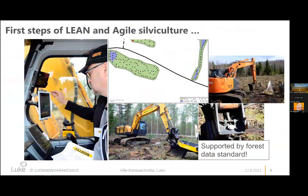One approach is precision forestry or agile operations, which take into account the soil and site properties better, and also the needs of different kinds of forest owners. This is one example concept of agile silvicultural operations — in soil preparation there's a positioning device, GPS or GNSS, attached to the top of the excavator boom.